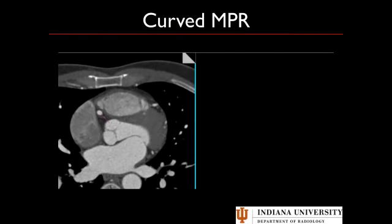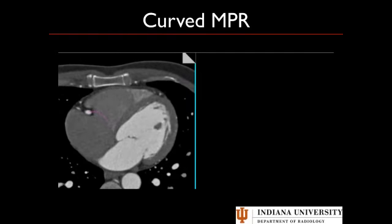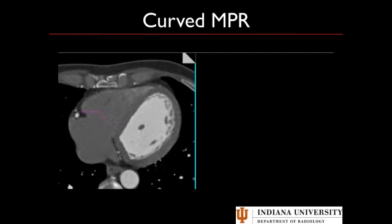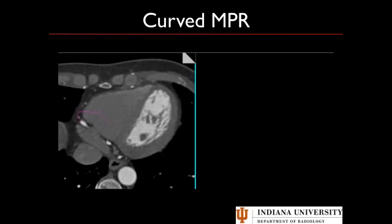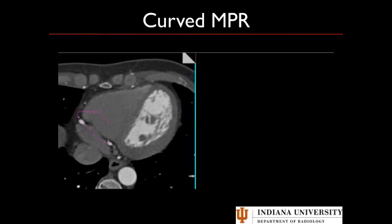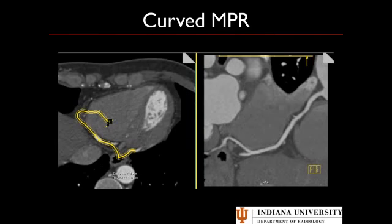Here we demonstrate making a curved MPR — something your techs will generally do for you, but it's worth knowing. We just follow the right coronary artery down, clicking along it on the axial images, and once we reach the bottom we have an MPR. You can make multiple parallel MPRs to have a stack to evaluate. Remember, at least in the United States, you need to reconstruct MPRs and store them on PACS to get paid for a CTA exam. It also helps communicate with referring physicians to demonstrate where a stenosis is.